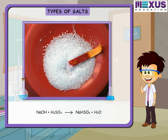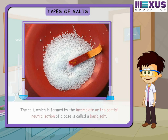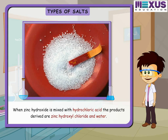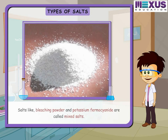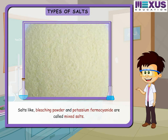The salt which is formed by the incomplete or partial neutralization of a base is called a basic salt. For example, when zinc hydroxide is mixed with hydrochloric acid, the products are zinc hydroxyl chloride and water. Salts like bleaching powder and potassium ferrocyanide are called mixed salts.